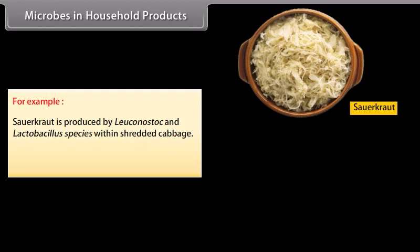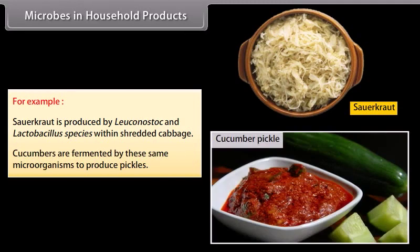There are many food products which are formed from microbes. For example, sauerkraut is produced by Leuconostoc and Lactobacillus species within shredded cabbage. Cucumbers are fermented by these same microorganisms to produce pickles.